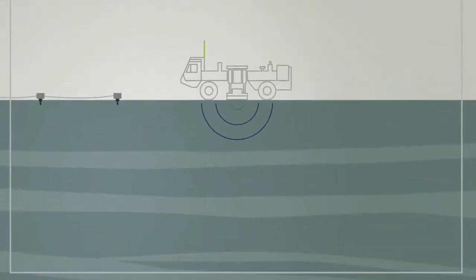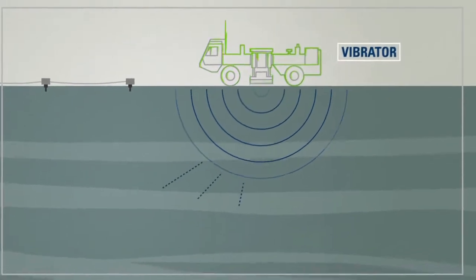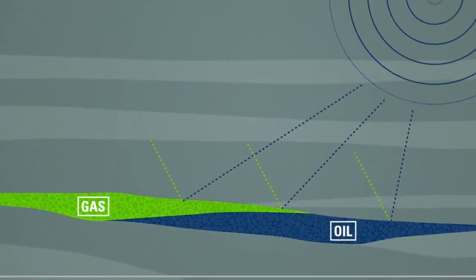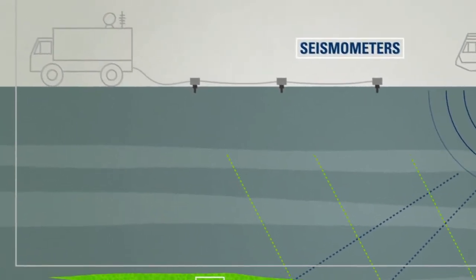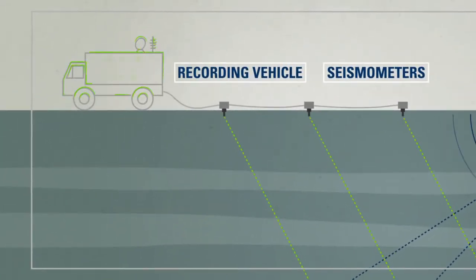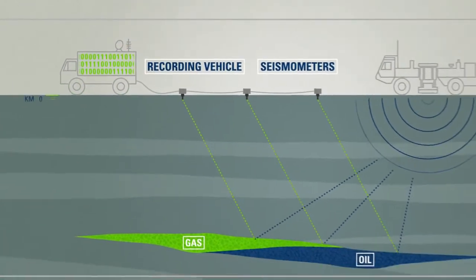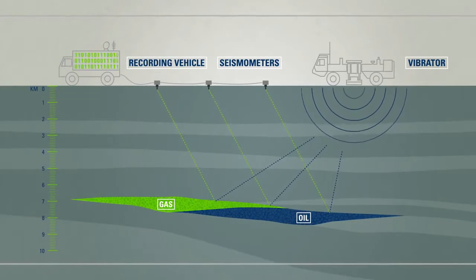On land, vibrations are generated by vibrators mounted on purpose-built vehicles. The data recorded by the seismometers is logged by powerful mobile computers. Using this method, we can explore as deep as 10 kilometers with remarkable accuracy.